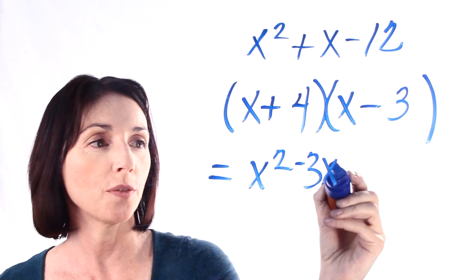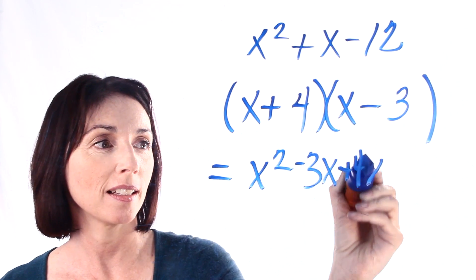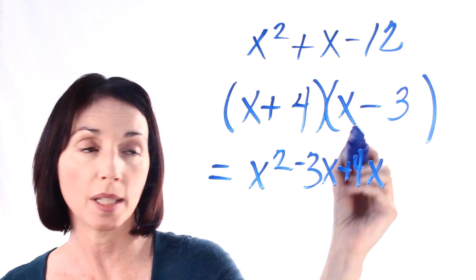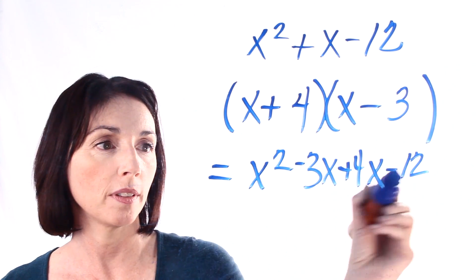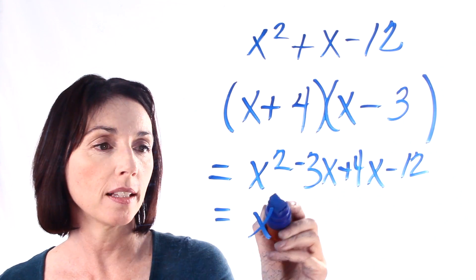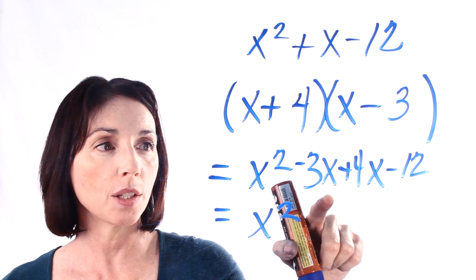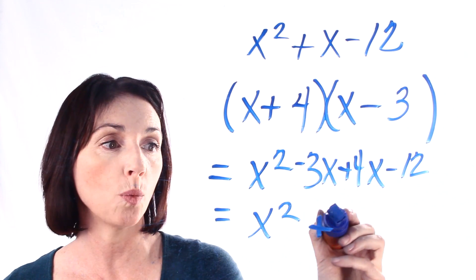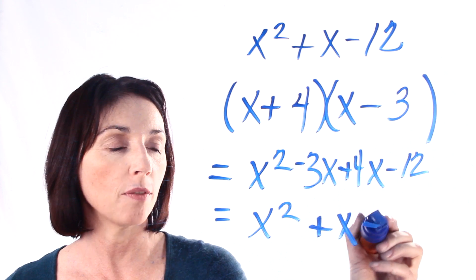4 times x, a positive 4 times x is plus 4x. And then positive 4 times negative 3 is minus 12. Now if we simplify this we get x squared minus 3x plus 4x gives us 1 positive x and we have minus 12. And that's exactly the expression we started with.